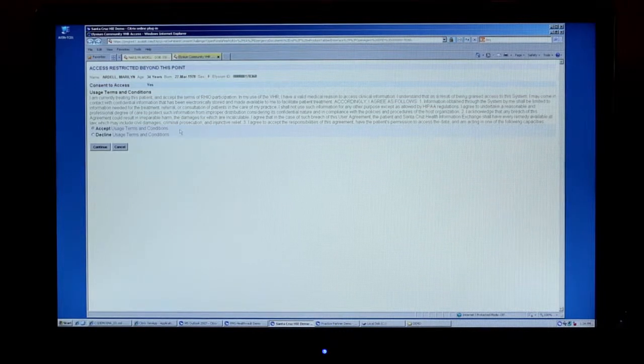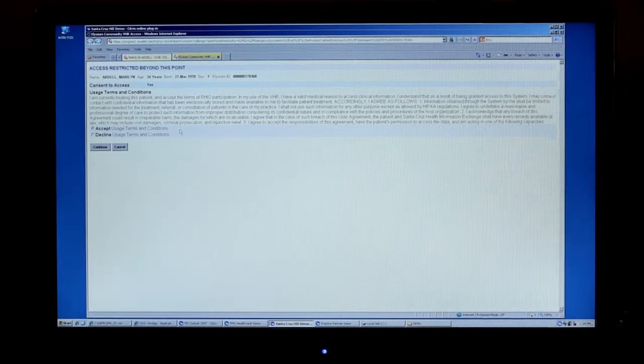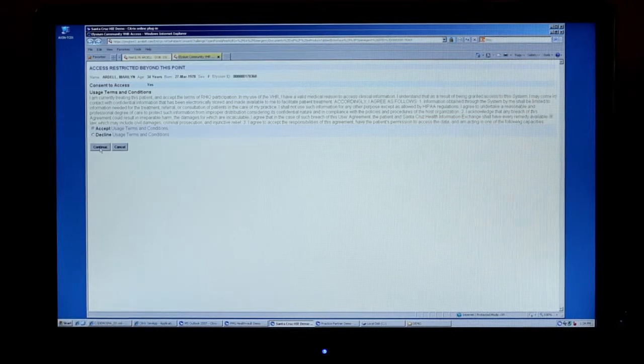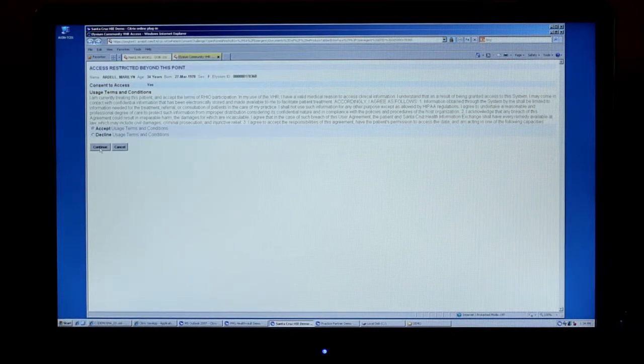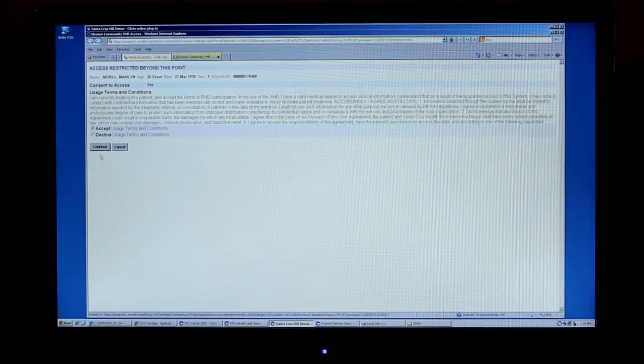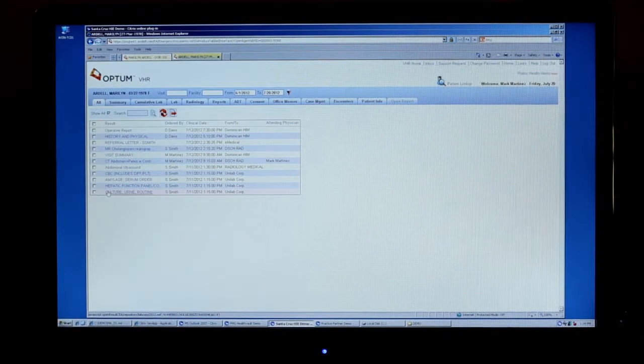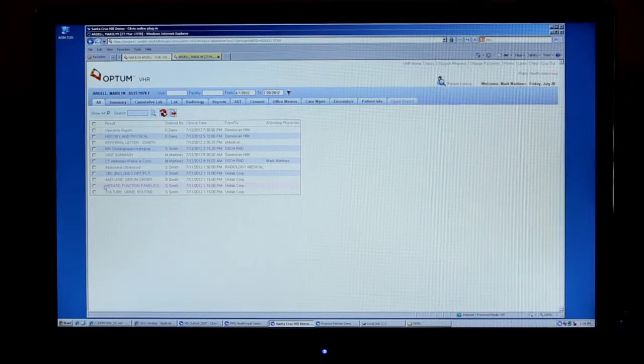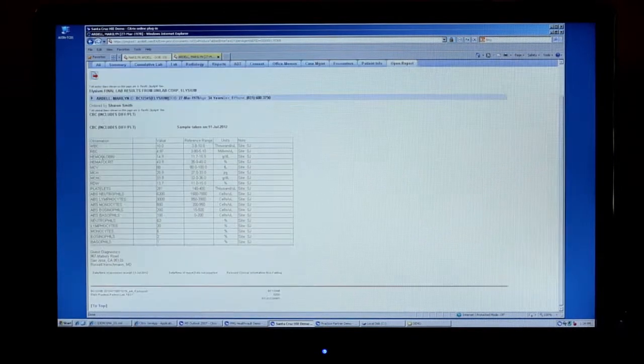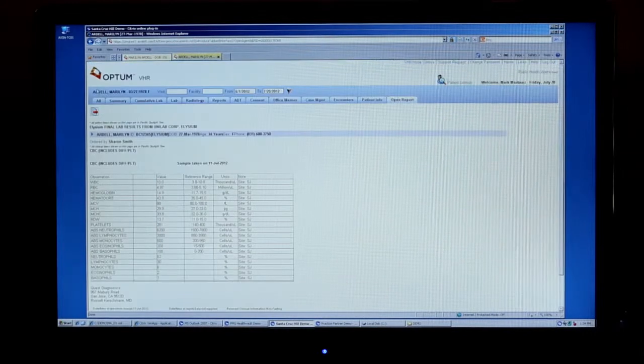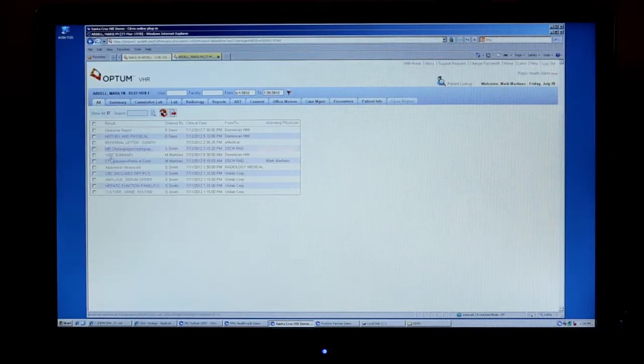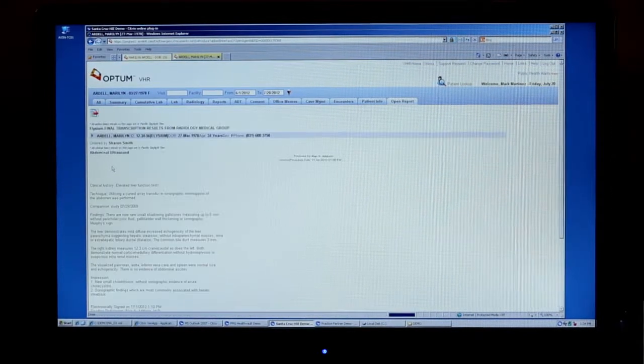We're going to log into the system as the emergency room doctor. As you can see, the doctor in the emergency room needs to click that they have a treatment relationship with the patient and the patient's consent to look at this data that was generated elsewhere. And now here you see that the emergency room doctor can see the test results that were ordered by the primary care doctor and now appears in that emergency room view of the data.